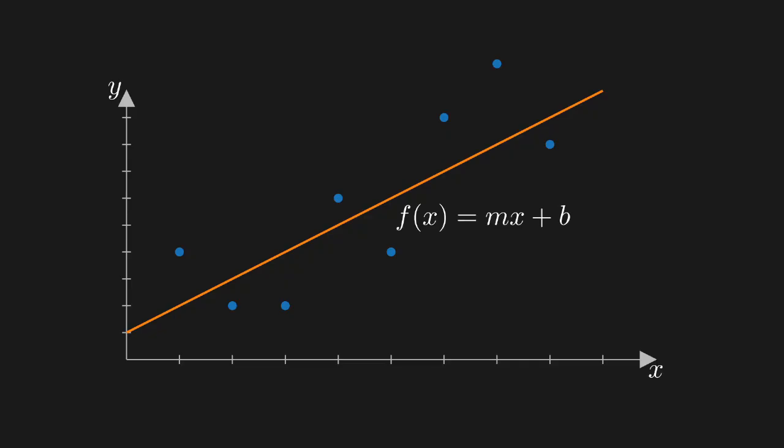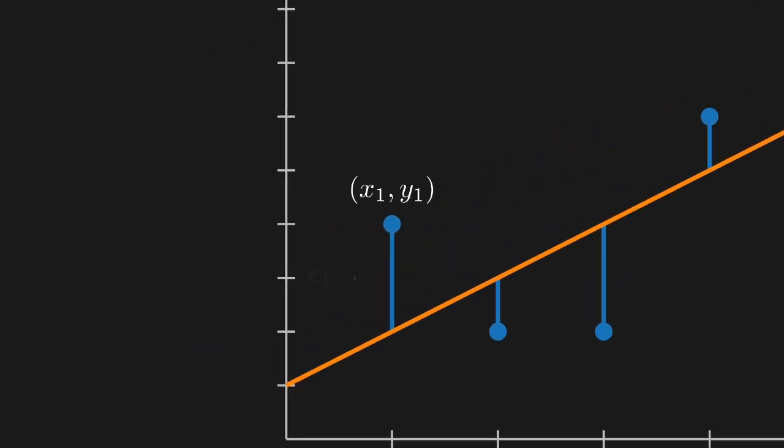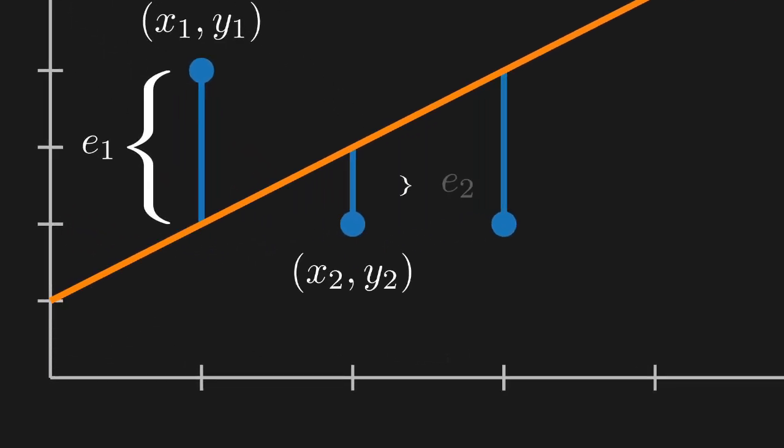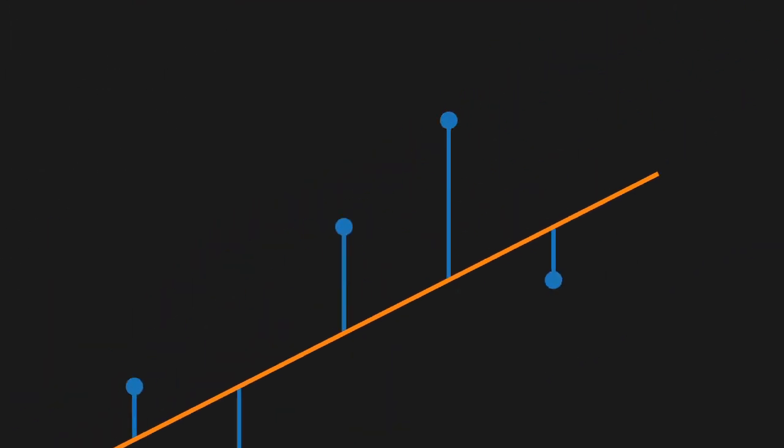Back to our data set. Let's start by defining the vertical distance between a data point and a line. We'll call this the point's error. If a point is close to the line, its error is small. And if it's far from the line, its error is large.